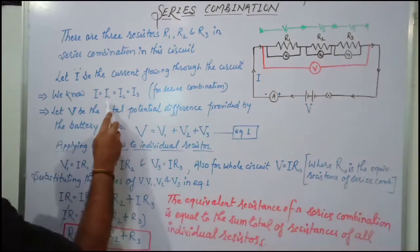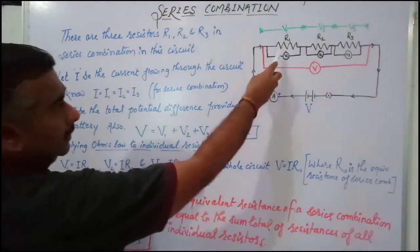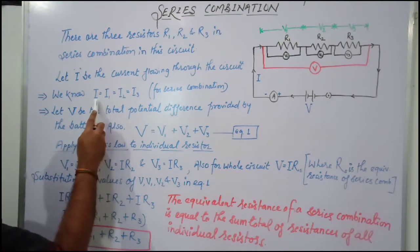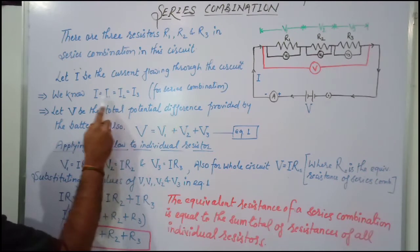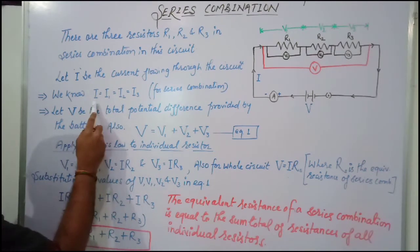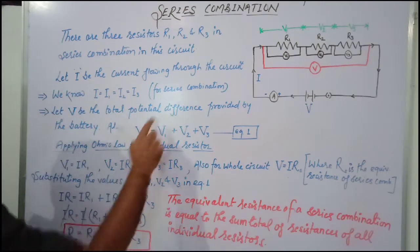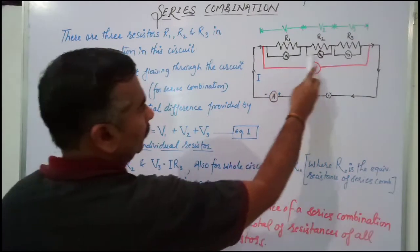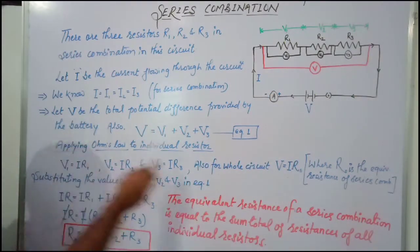Let I1 be the current flowing through resistor R1. In series combination, I1 equals I. Similarly, I2 is the current flowing through resistor R2, and it is also equal to I. So similarly, I3 is also equal to I, because in series combination the same amount of current flows through each resistor.